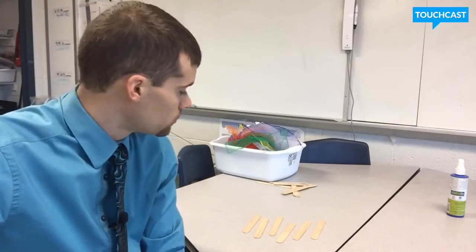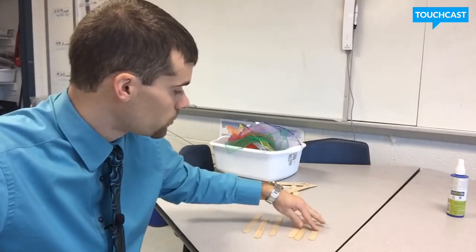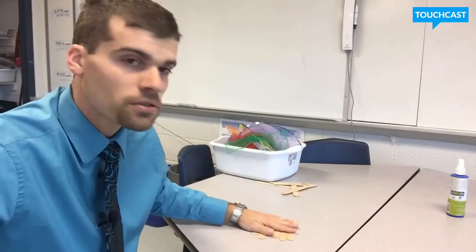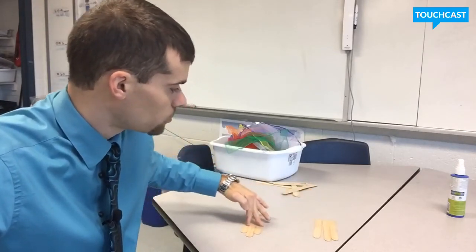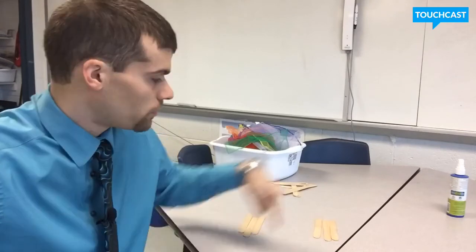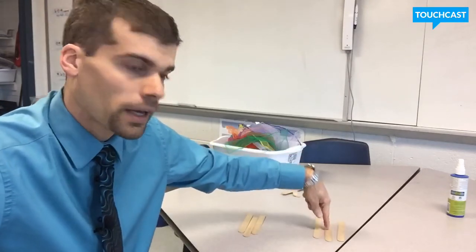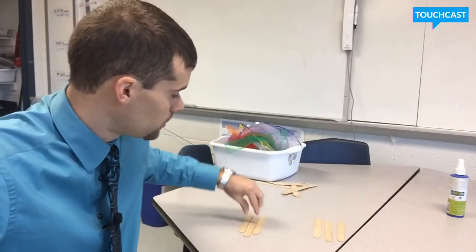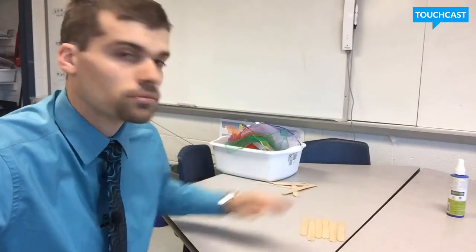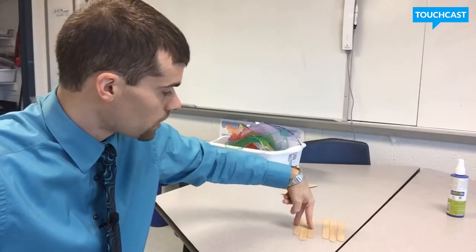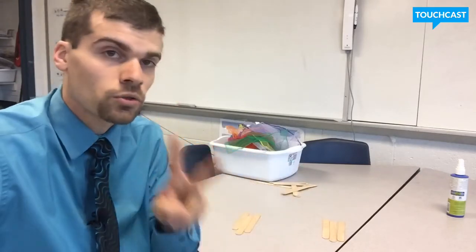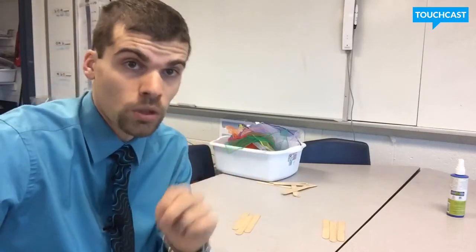An option would be to take my 2 fifths and split it into 2 groups. If this is 1 fifth and this is 1 fifth, together we have 2 fifths. So we can simply just take our 2 fifths and split it into 2 groups because it's 2 of the fifths.